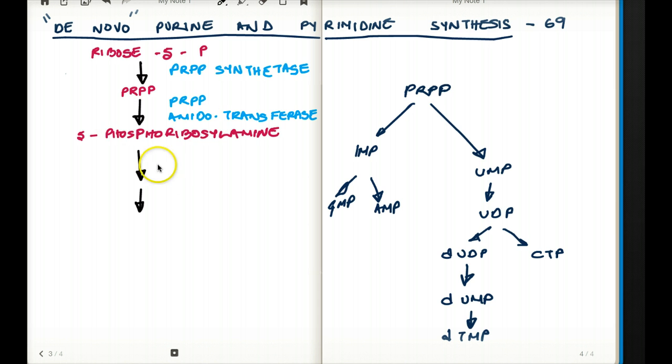So from 5-phosphoribosylamine, we go through a couple of steps which we might not have to remember at this stage and we make our generalized product which is IMP. So all this was skipped in this picture which we kind of have to know. They're kind of important. So from 5-phosphoribosylamine, we make IMP.